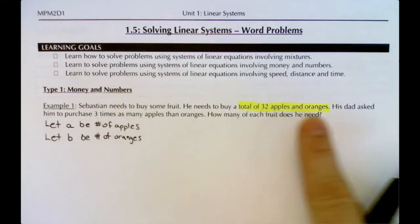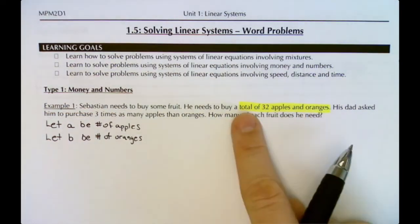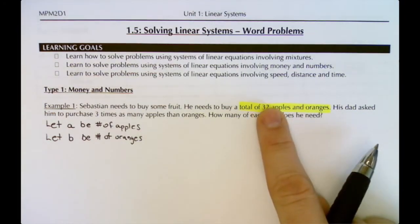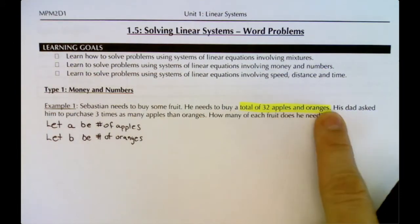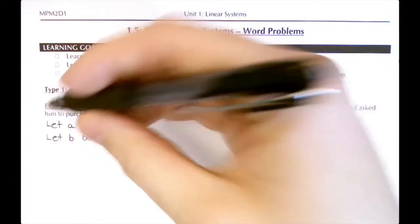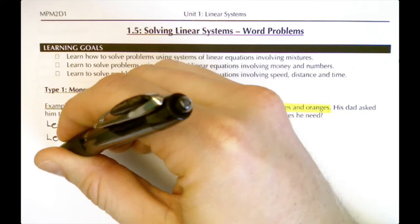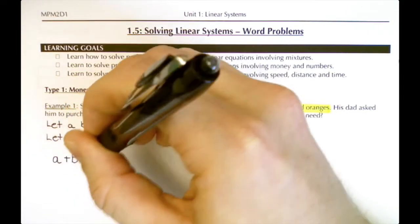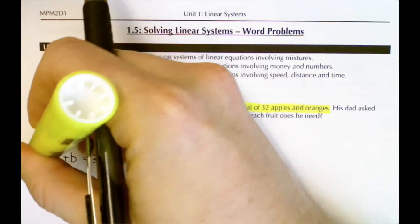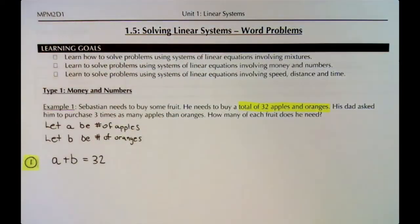The highlighted sentence gives us a hint for our first equation: the total of apples and oranges is 32. 'Total' means add, so apples plus oranges equals 32. Since apples is A and oranges is B, our first equation is A + B = 32.